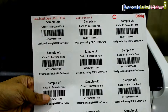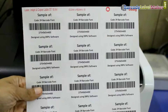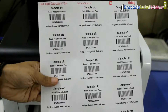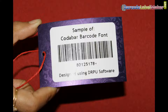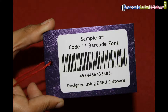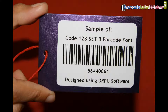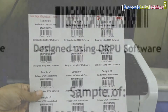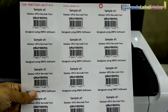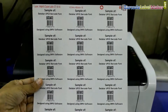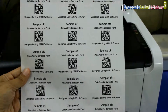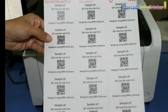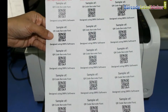Linear barcode is made up of lines and spaces and encodes data only in one dimension. 2D is a two-dimensional way to represent information. It encodes more data per unit in comparison to Linear.